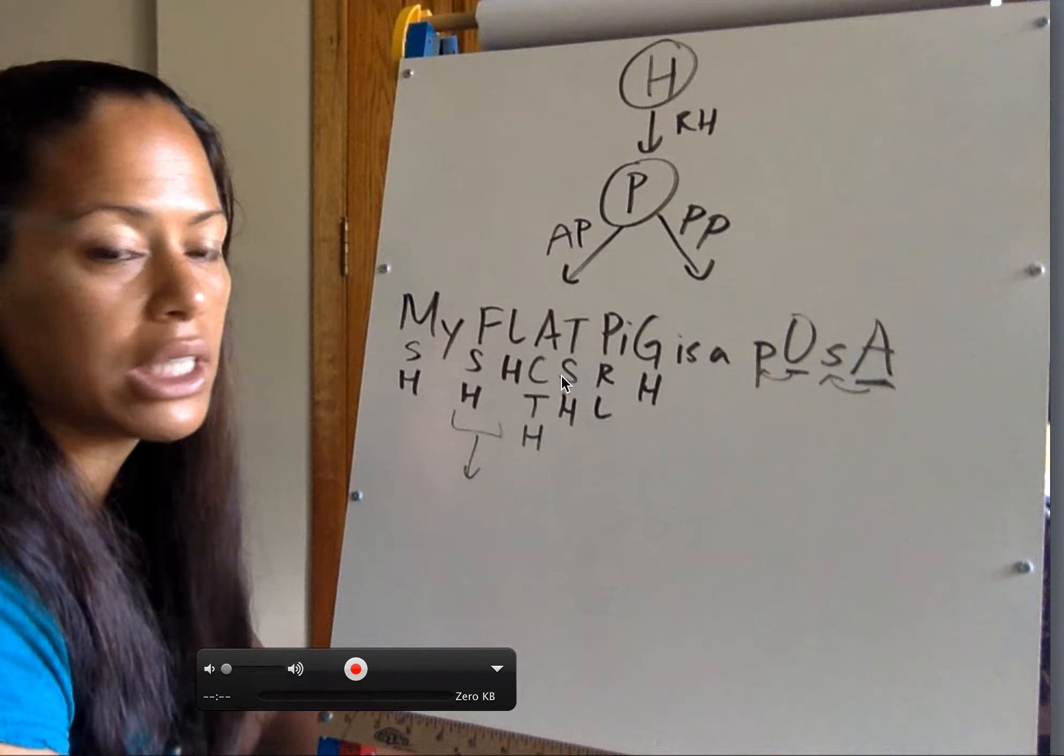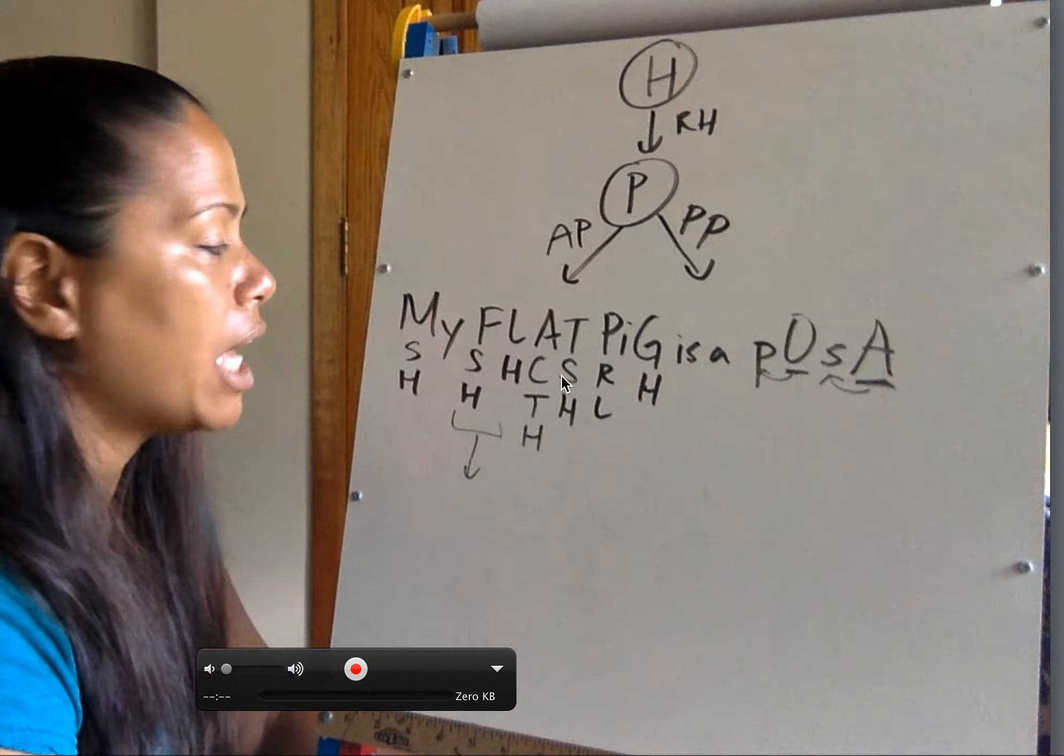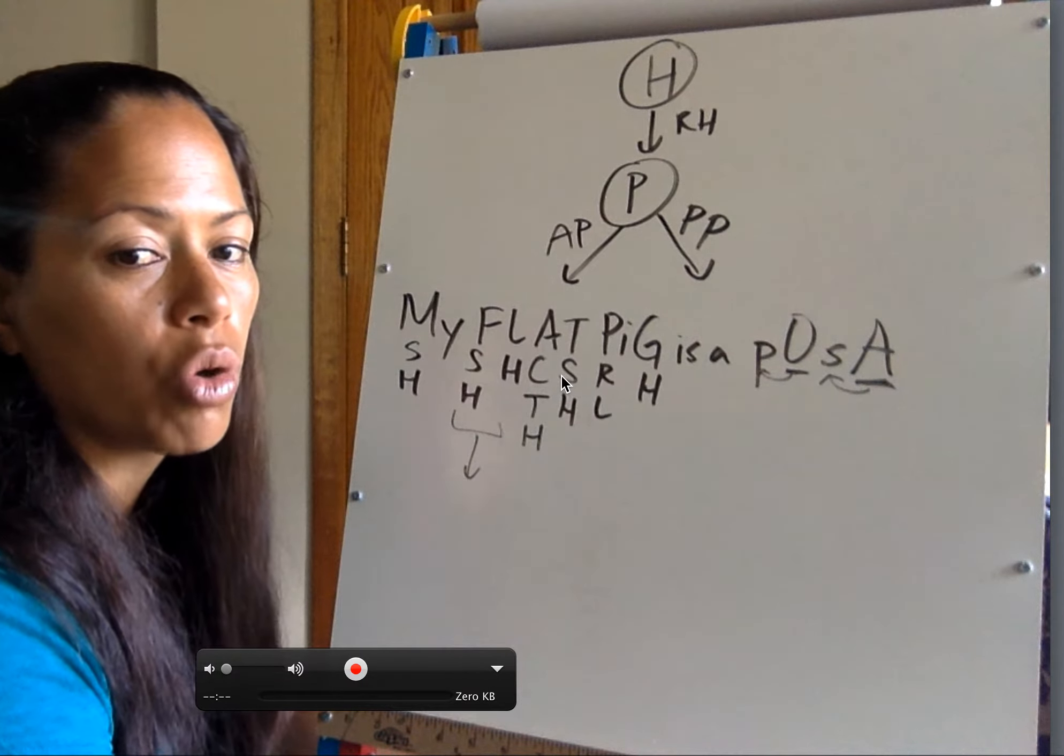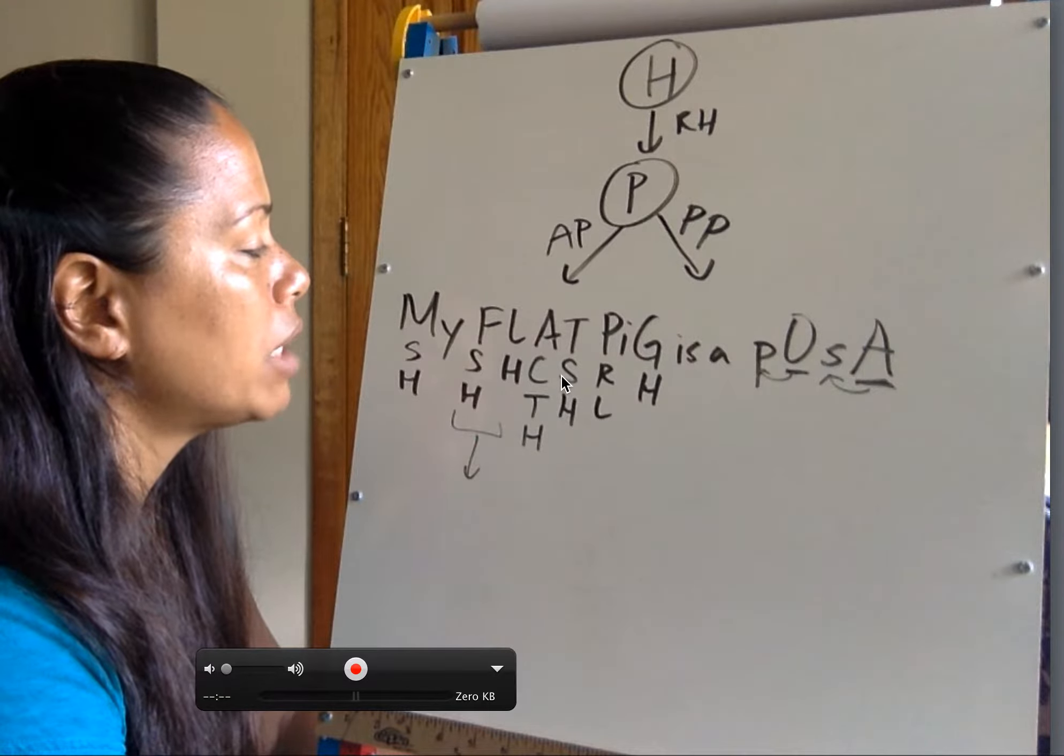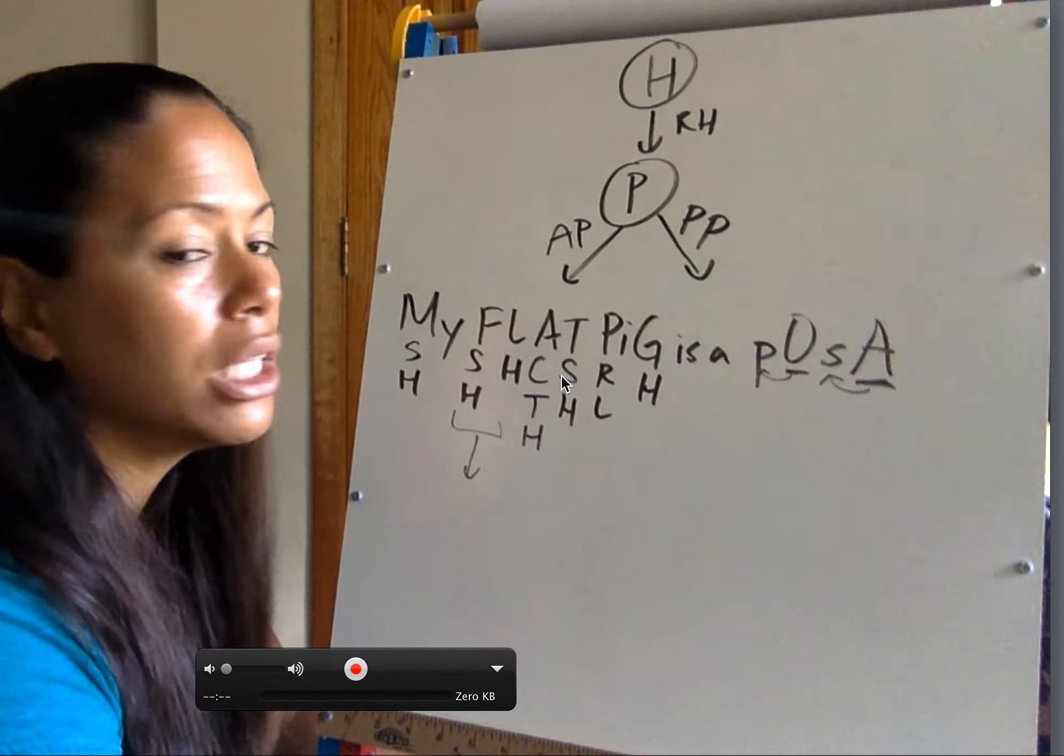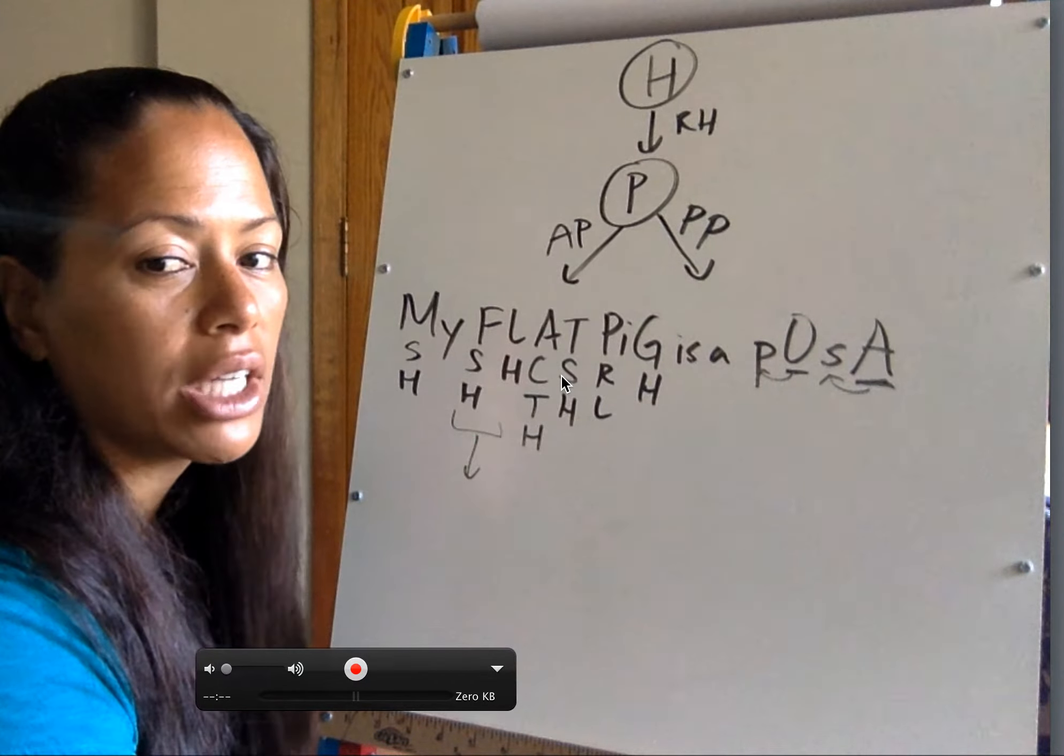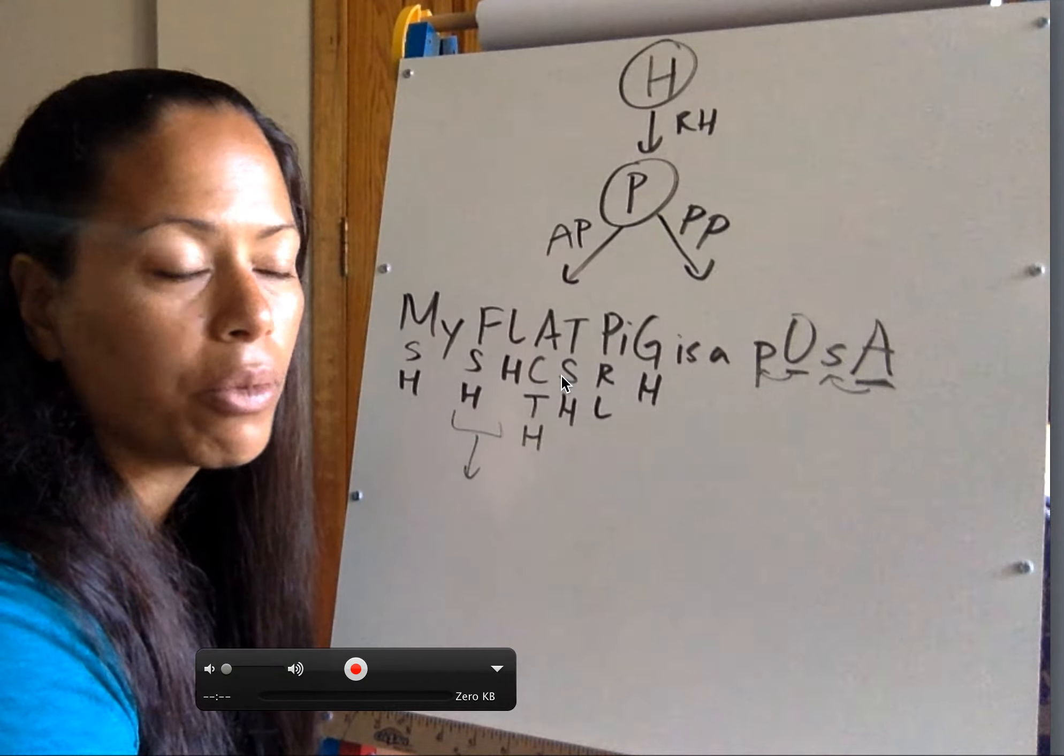FSH and LH are both acting on the gonads, which are the ovaries and testes. FSH stands for follicle stimulating hormone. LH stands for luteinizing hormone. ACTH is adrenocorticotropic hormone. TSH is thyroid stimulating hormone. PRL is prolactin. GH is growth hormone. O again was oxytocin. A was ADH. ADH stands for antidiuretic hormone.